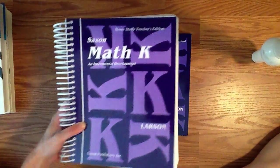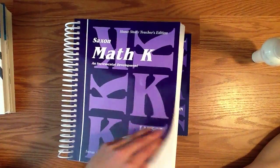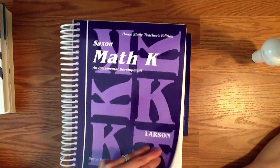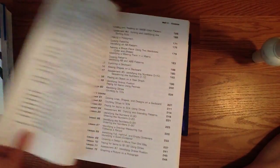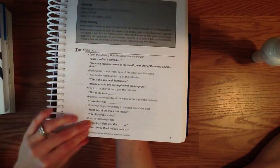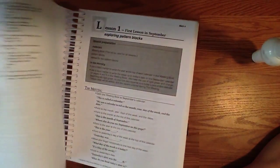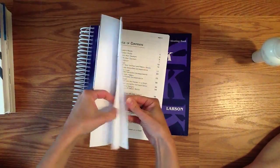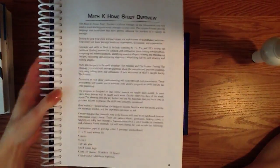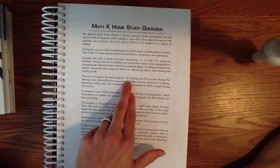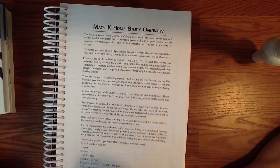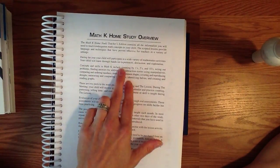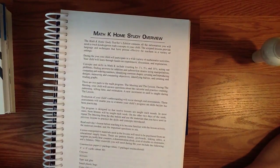So briefly, let's take a look at what the instruction manual looks like. Now all throughout Saxon, the lesson manual gives you scripted lesson plans. So you'll see here that there's going to be a script for each lesson that you do. For kindergarten, it's broken up into two parts: the meeting and the lesson. This is the only book it comes with, so your child's going to be learning through hands-on experiences, discussion, and exploration.